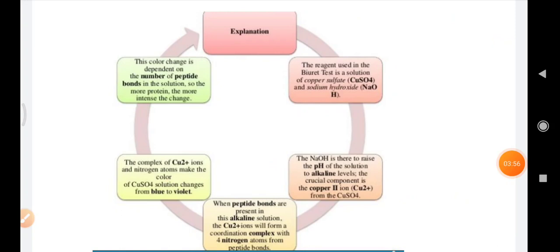Now coming to the explanation portion. The reagent used in the biuret test is a solution of copper sulfate and the sodium hydroxide. The NaOH, that is the sodium hydroxide is there to raise the pH of the solution to the alkaline levels.